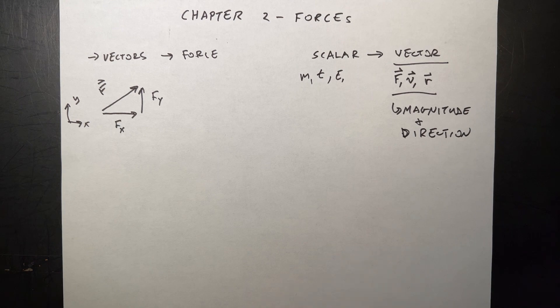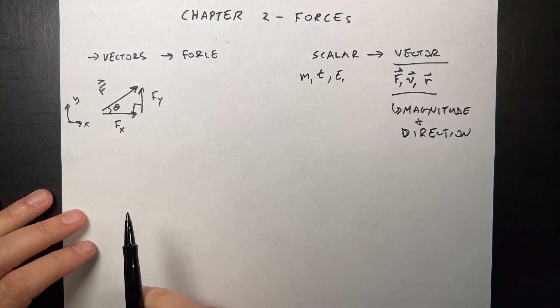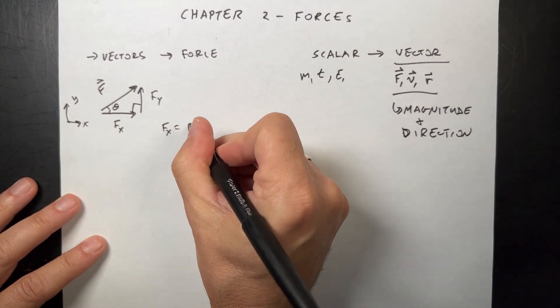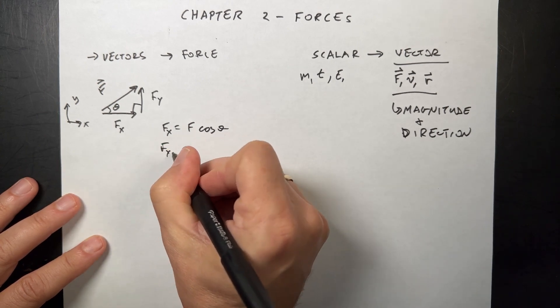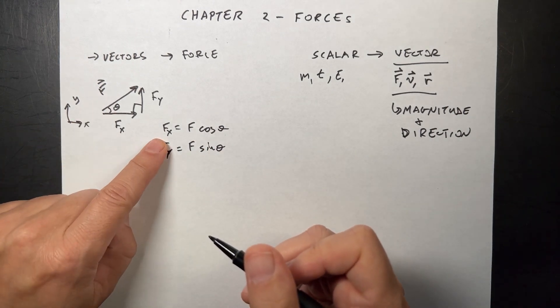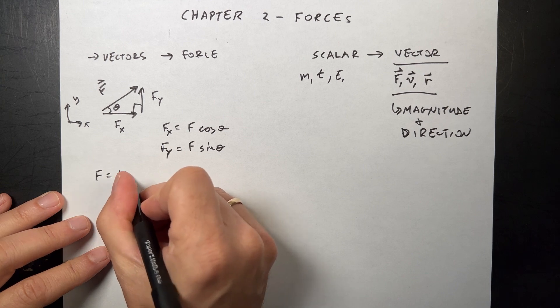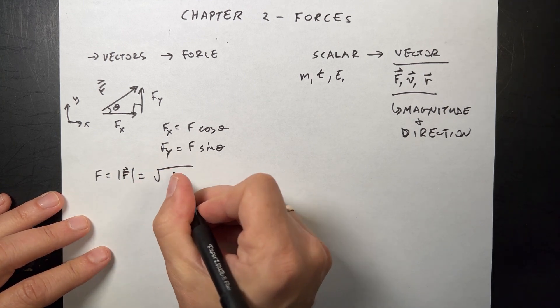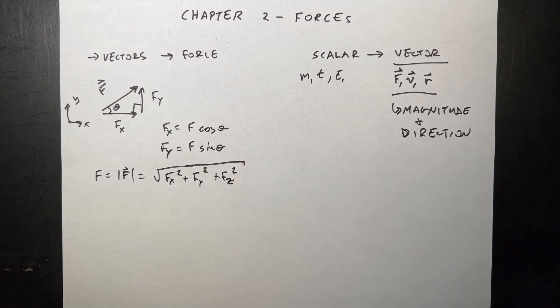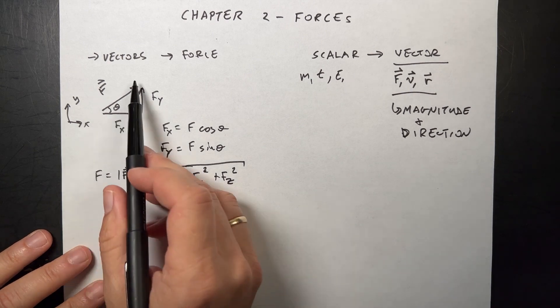This is a right triangle because x and y are perpendicular. If you know that right triangle, I can say the magnitude Fx equals the magnitude of F times the cosine of theta, and the magnitude of Fy equals the magnitude of F times the sine of theta. These are only true if theta is measured from the x axis.